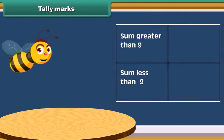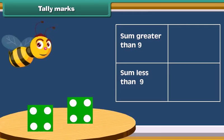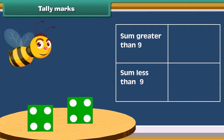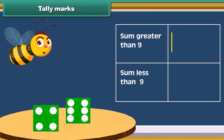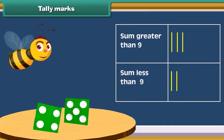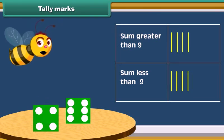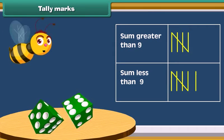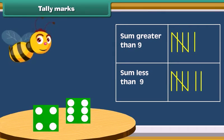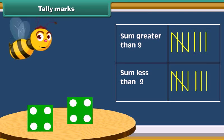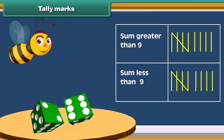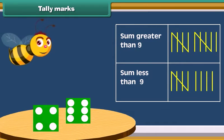Now let's do an activity. Take two dice and throw both the dice together. Note how many times the sum of numbers on both dice is greater than 9, and also note the number of times the sum is less than 9. Do this activity for 20 times and mark in the table each time.